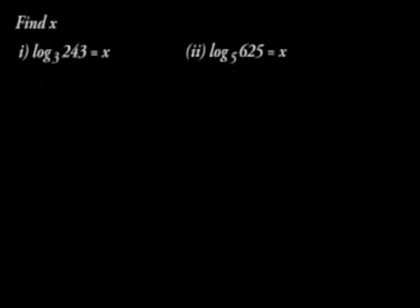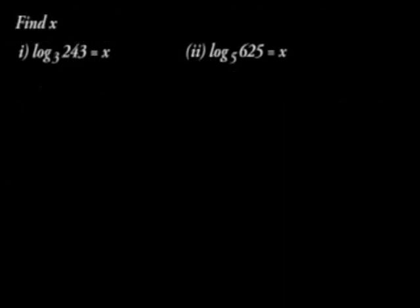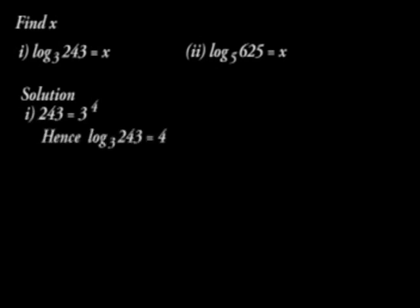For example, find x in the following. Log to base 3 of 243 equals x. Log to base 5 of 625 equals x. In the solutions, 243 is equal to 3 raised to power 4. And hence, we have log to base 3 of 243 is equal to 4. x is equal to 4.